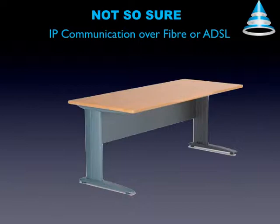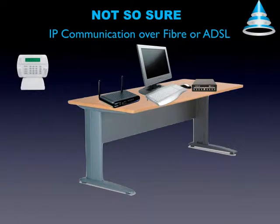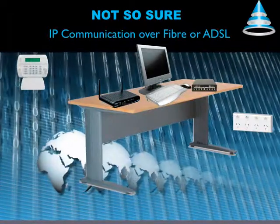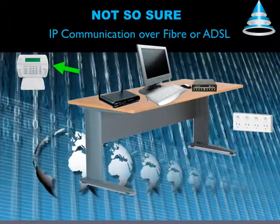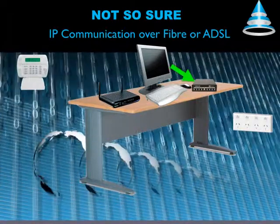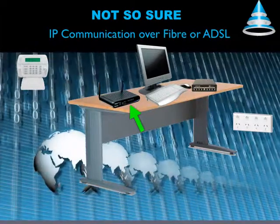Let's consider a standard home configuration. Here we have a computer desk, an ADSL router, a computer, an ethernet switch, an alarm system capable of IP communication, a 220 volt power source, and the internet. Normally the security system would be interfaced into either the ethernet switch or the ADSL router, allowing the security system access to the ADSL feed and thus making communication with your monitoring center possible.